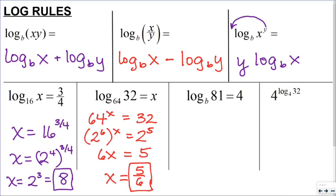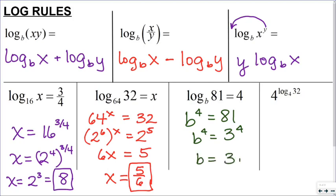In this next problem, I'm going to approach the same way — rewrite in exponential form: b to the 4th equals 81. I'm going to write 81 in its lowest base form, which is 3 to the 4th. So now I have two powers with equal exponents that equal each other, which means the bases must also be equal. So b must equal 3.